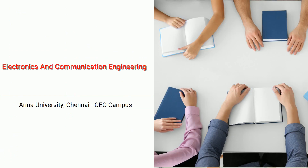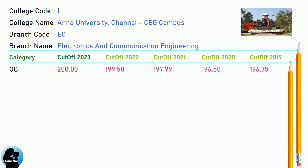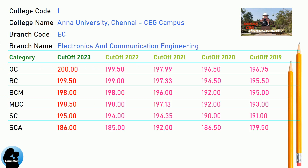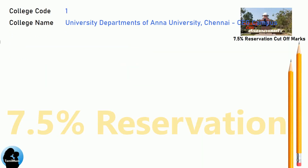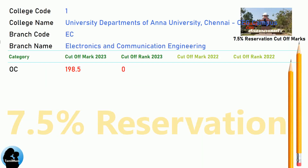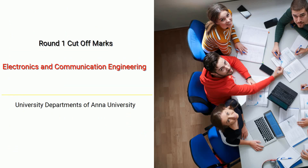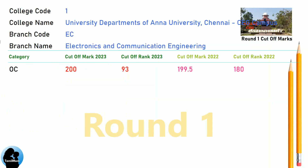DNA 7.5 Reservation Cut-Off for Anna University Chennai CEG Campus in Electronics and Communication Engineering. DNA 7.5 Reservation Cut-Off for Anna University Chennai CEG Campus in Computer Science and Engineering. DNA 8.5 Reservation Cut-Off for Anna University Chennai CEG Campus in Computer Science and Engineering.